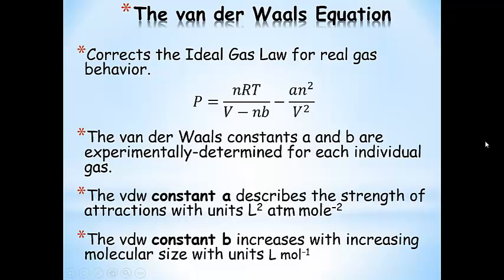Van der Waals constant A describes the strength of the attractions — the larger the A, the more attractions the gas molecules feel for each other. Van der Waals constant B increases with increasing molecular size, and has to do with the repulsive interactions from the molecules actually taking up space.